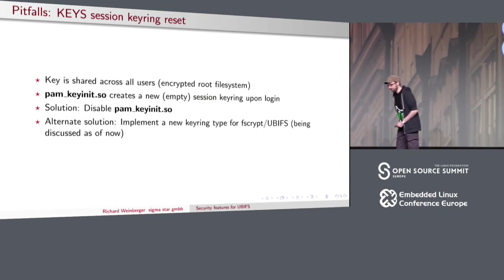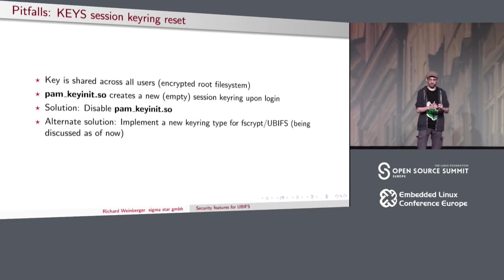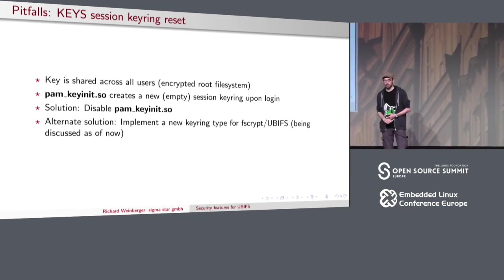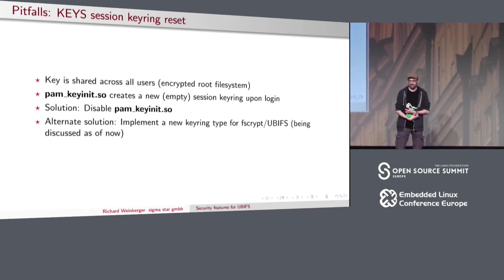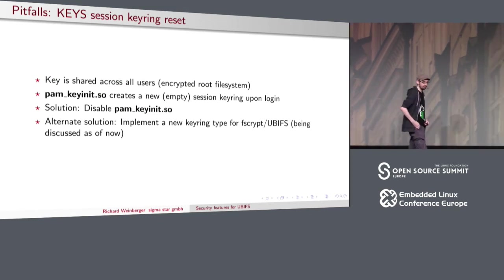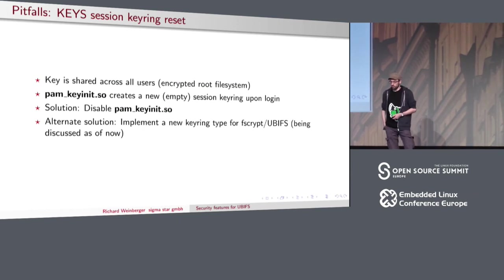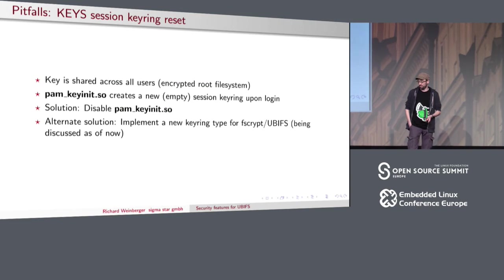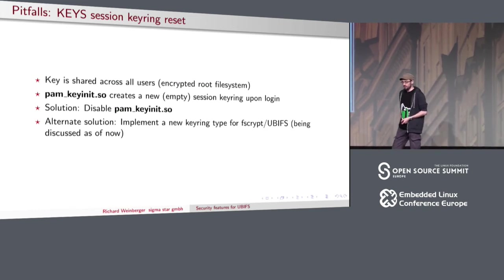A thing that hit us hard is the PAM keyinit module. Usually the session keyring is shared across all processes, which works fine, but there is a PAM module enabled by default in many distributions. When you log in, this module creates a new login session and a new session keyring. That means the newly logged-in user suddenly can't use the previously loaded key, and all files become unreadable. This is a known problem to the FSCrypt maintainers. The ideas are to create a new keyring type specifically for FSCrypt, or to drop key subsystem support entirely and use an ioctl instead. For now, just disable this PAM module.